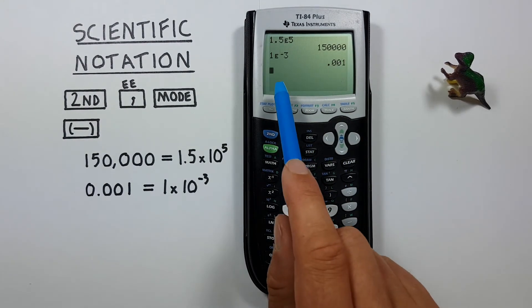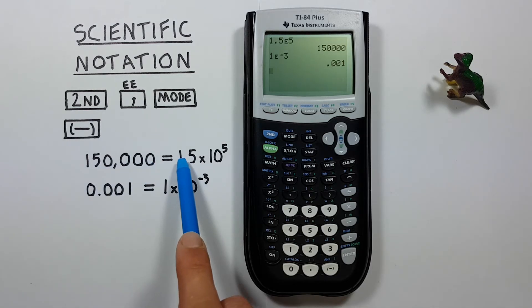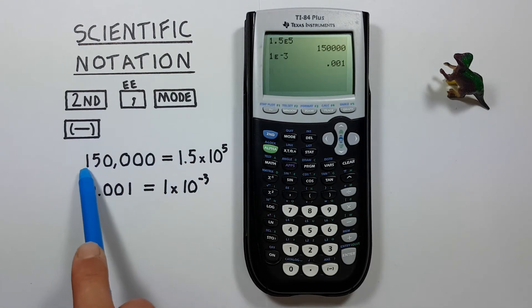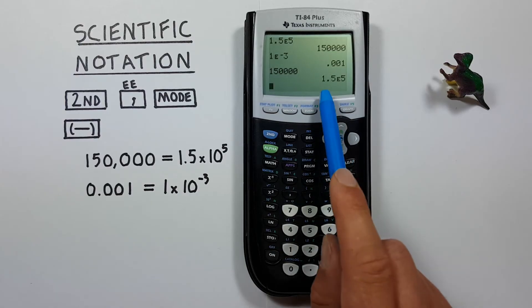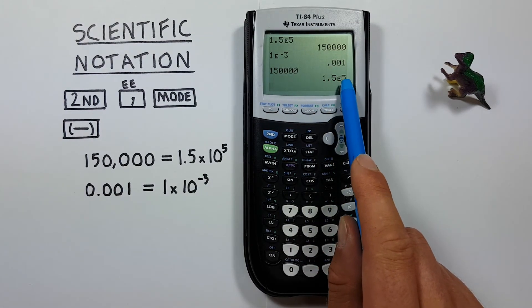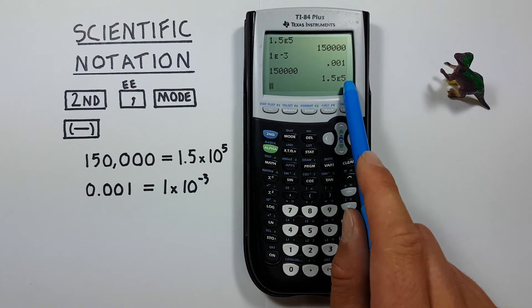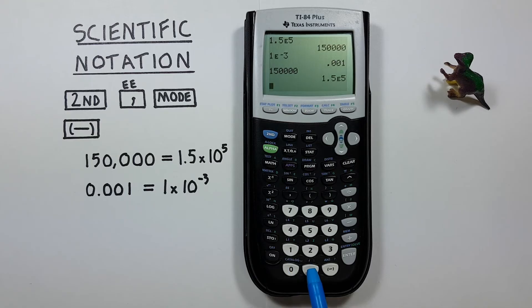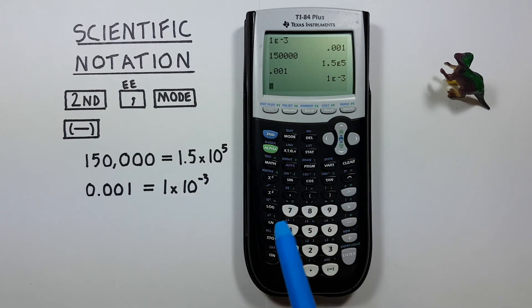now we can enter our numbers in normal mode and convert them to scientific notation. So if we enter 150,000 and press enter, we see this converts it to 1.5e, which is times 10 to the power of 5. Also with small numbers, 0.001 changes to 1 times 10 to the power of negative 3.